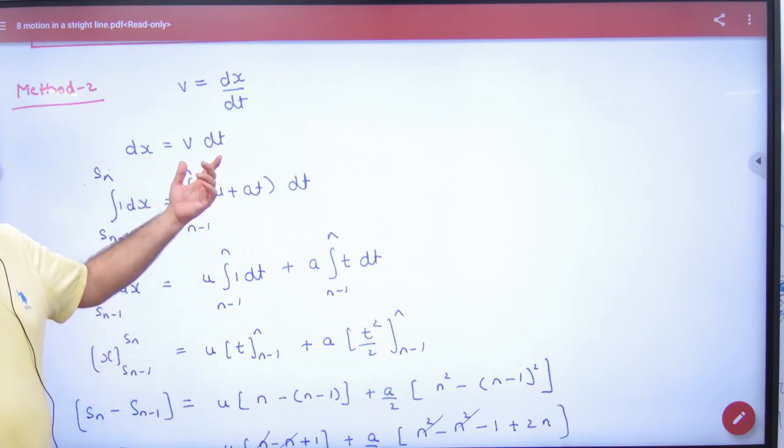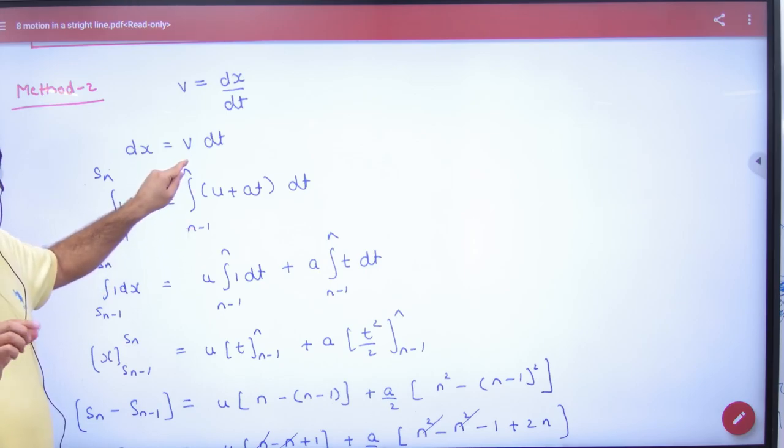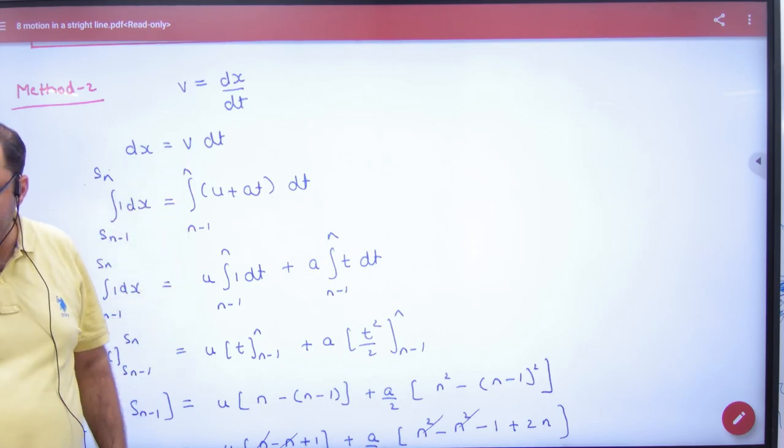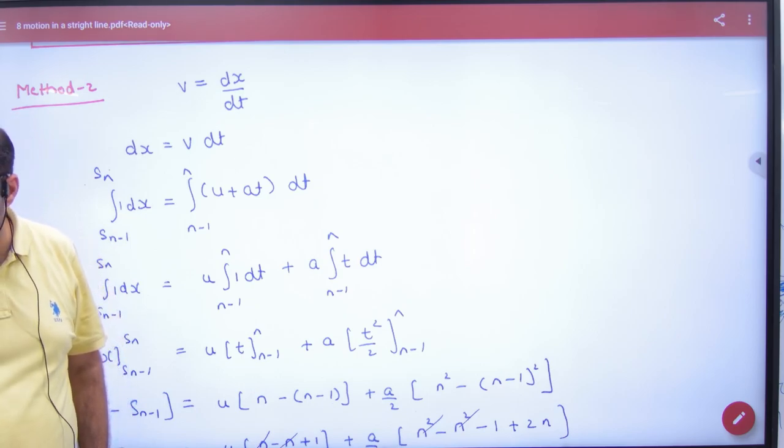Just remember that when we have to find the distance, the time starts at n-1. Because n-1, the time will be 1 second. Last one second, clear? Limit clear - n-1 to n.